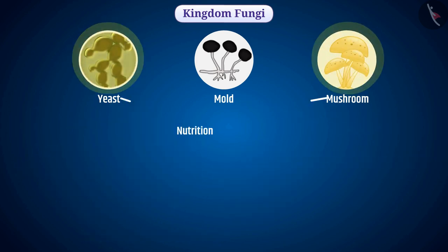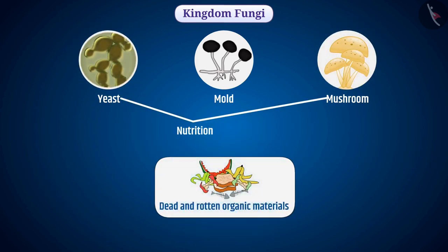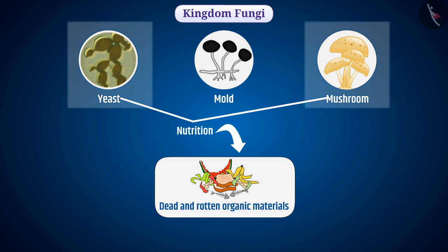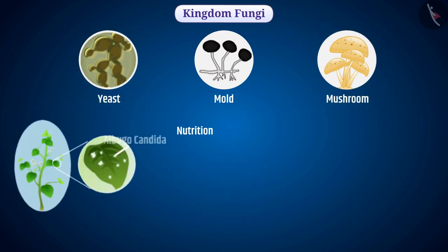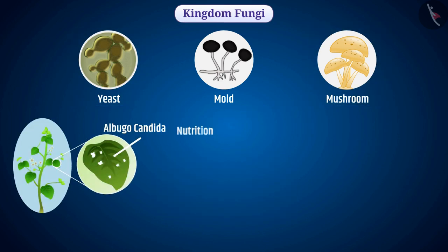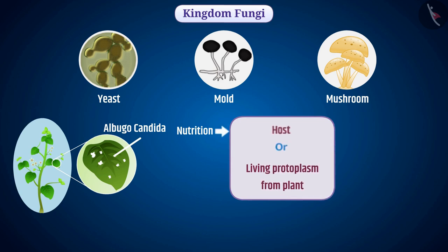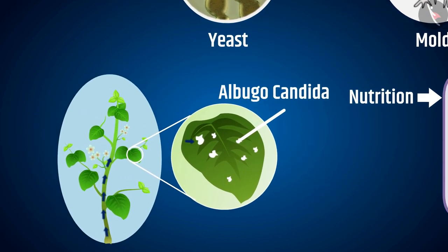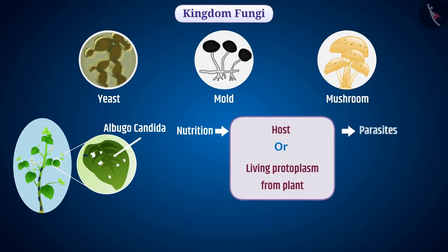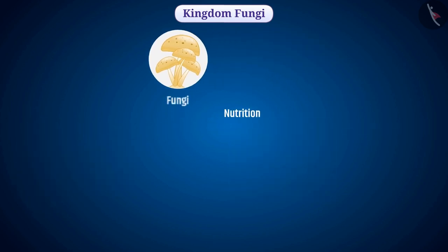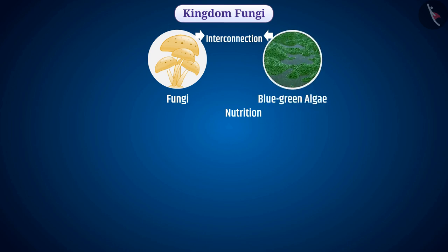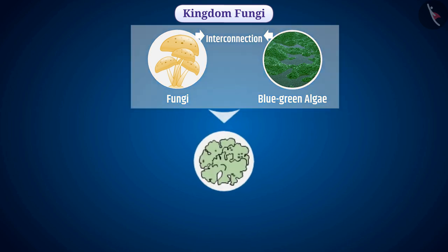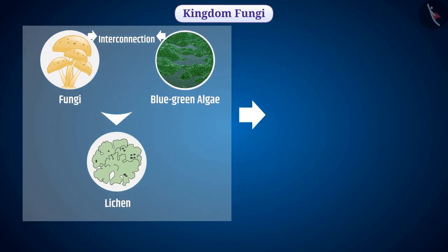Some of these organisms depend on dead and rotten organic materials for nutrition — these are called saprophytes. Some organisms receive their nutrition as living protoplasm from a host body such as an animal or a plant — these are called parasites. Some fungi may also form permanent interconnections with algae such as blue-green algae and higher plants that aid in nourishing each other. Such fungi are called symbiotic or lichen, and such a relationship is called symbiosis.